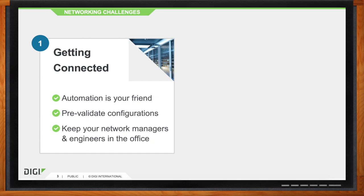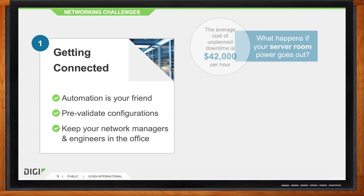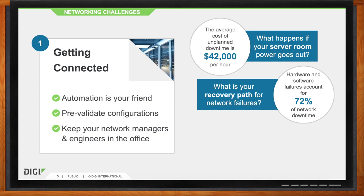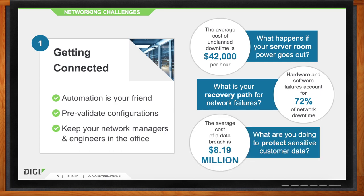If we look at the average cost of unplanned downtime, it's roughly $42,000 per hour, depending on the size of your network and business. Hardware and software failures account for roughly 72 percent of network downtime. The average cost of a data breach is give or take eight million dollars. These are big numbers that cost a lot to your business, and these can all be avoided with reliable management tools.